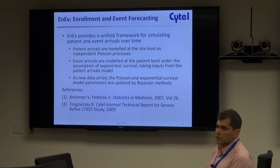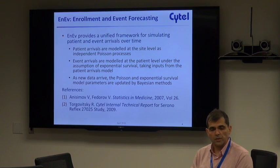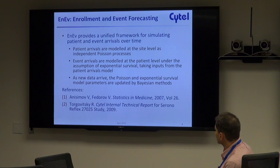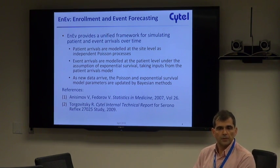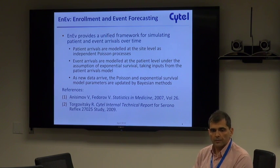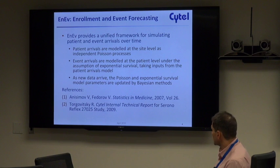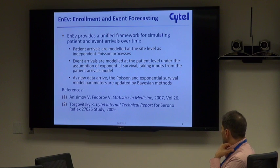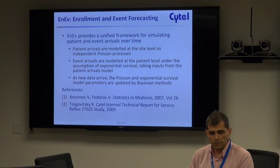In terms of enrollment and event forecasting, the framework we're using is taken from the paper by Anissimov and Fedorov. We model patient arrivals at the site level as independent Poisson processes, and event arrivals are modeled at the patient level under the assumption of exponential survival. As new data arrive, the Poisson and exponential survival model parameters are updated by Bayesian methods.